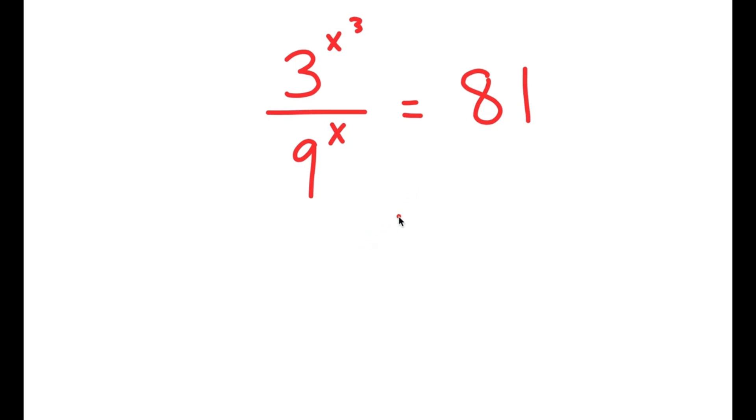In this equation, I have 3 to the power of x to the power of 3, over 9 to the power of x, is equal to 81.